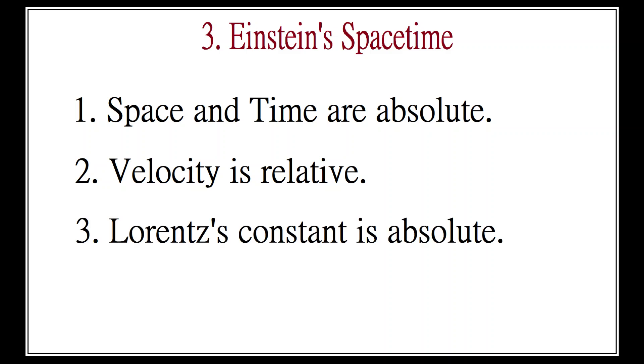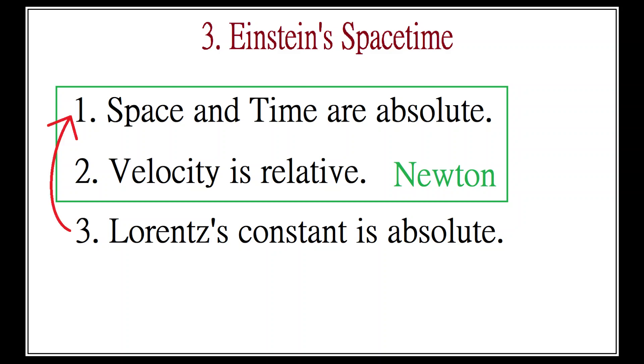Third, Lorentz's constant, c equals 300,000 kilometers per second, is always the same for all observers. Concepts 1 and 2 are consistent with each other—that's just Newtonian mechanics. But 3 directly contradicts 1. Naturally, most physicists sought ways to reject 3 so they could stick with Newton.